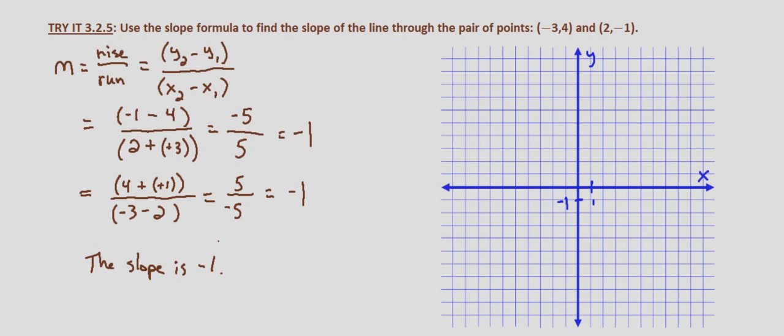Now we're going to check that by plotting on the rectangular coordinate system. Negative 3, 4: so negative 1, negative 2, negative 3, and then up 4—1, 2, 3, 4—that's our point negative 3, 4. And then 2, negative 1: so 2 to the right from the origin and down 1. And then we draw a line through those 2 points.